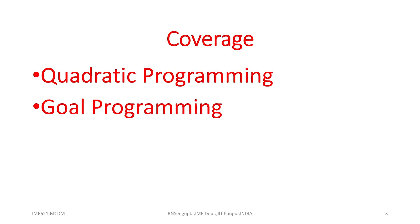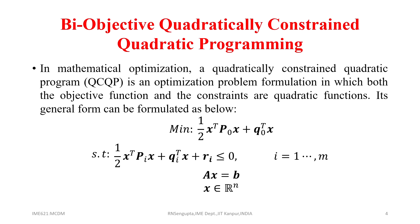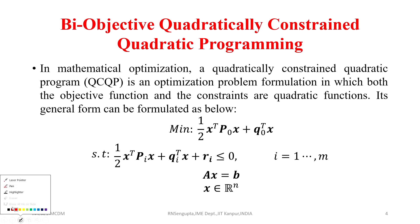Now we will expand our discussion and consider a whole set of ideas. The example given will be the biobjective quadratically constrained quadratic programming. As the name says, there are two objectives — one is the quadratic part and one is the linear part.